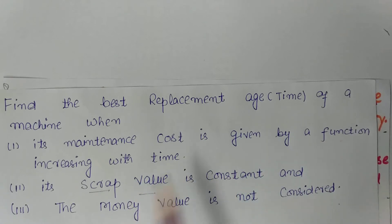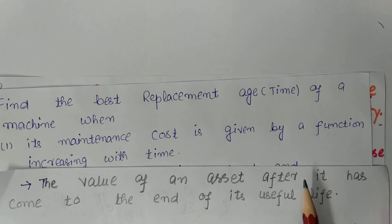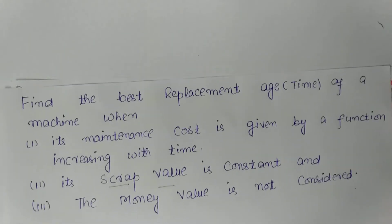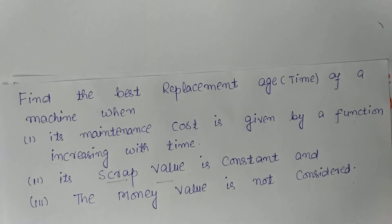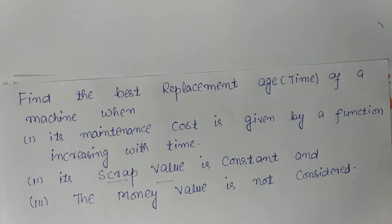You may be asked to find the best replacement age when its maintenance cost is given by a function increasing with time, and its scrap value is constant. Scrap value is the value of an asset after it has come to the end of its useful life. For example, suppose you buy a car for $20,000 and the car lasts 15 years — after 15 years the car is run into the ground and its next stop is the junkyard. The scrap value is the price a junkyard or recycler might pay you for the old non-working car.